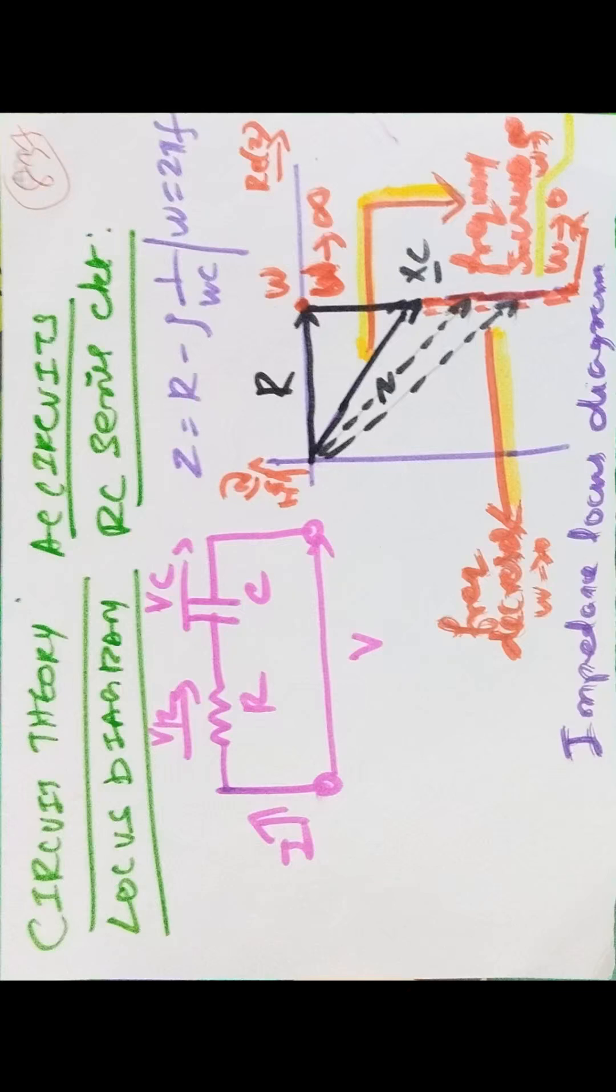Impedance locus diagram shown in figure. Note that as frequency decreases, Z increases, or as frequency increases, Z decreases. Omega varies from zero to infinity.